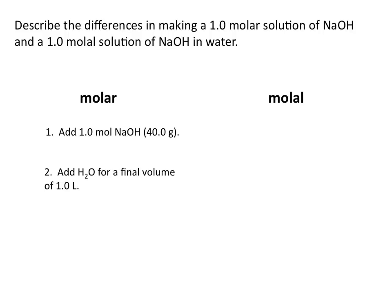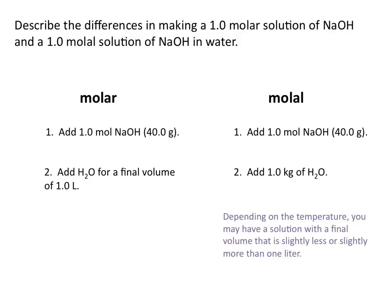If you were to make a one molal solution of NaOH, you would again add one mole of NaOH, but then you would add one kilogram of H₂O. Now at normal temperature and pressure, one kilogram of H₂O is almost exactly equal to one liter of H₂O. One of the first differences you'll notice is that in the molar solution we added water to make a final volume of one liter, and in the molal solution we added one kilogram, or approximately one liter, of H₂O. Depending on the temperature at which you make the solution, you may have a final volume slightly less or slightly more than one liter.